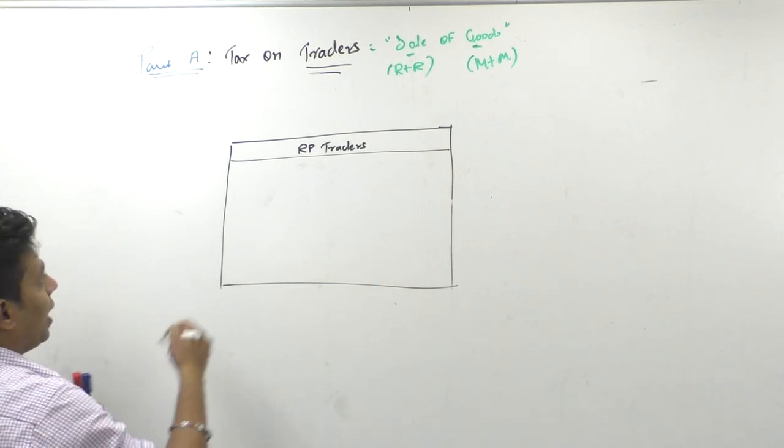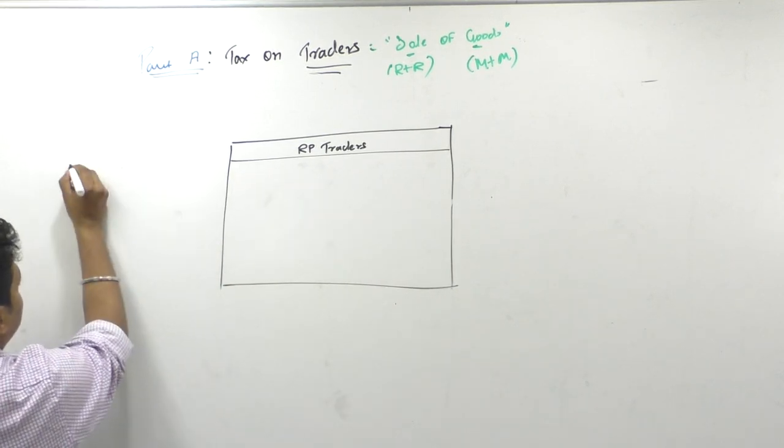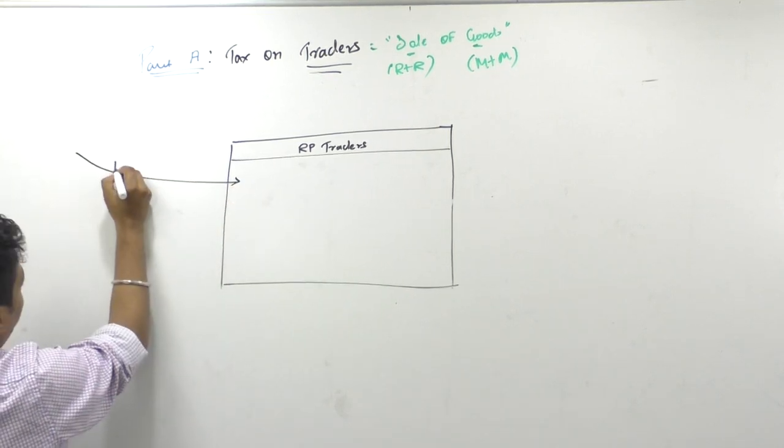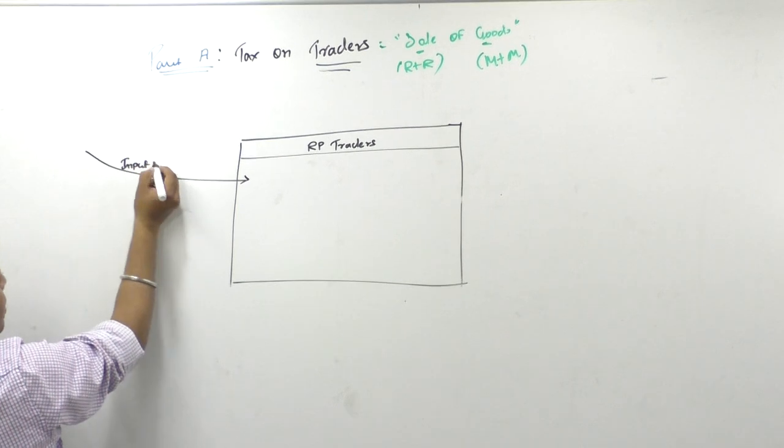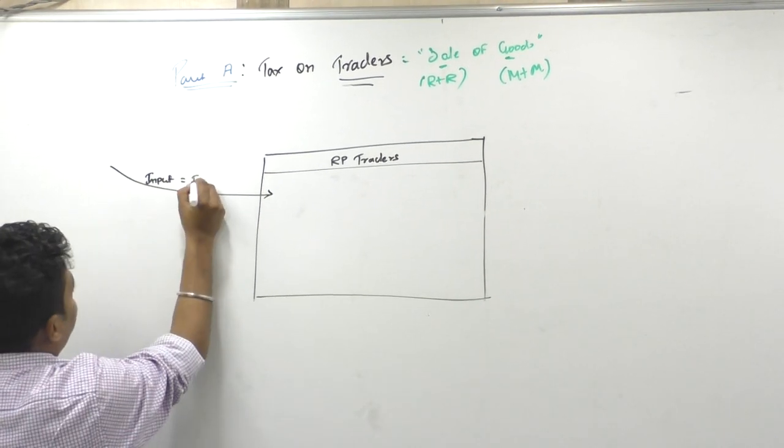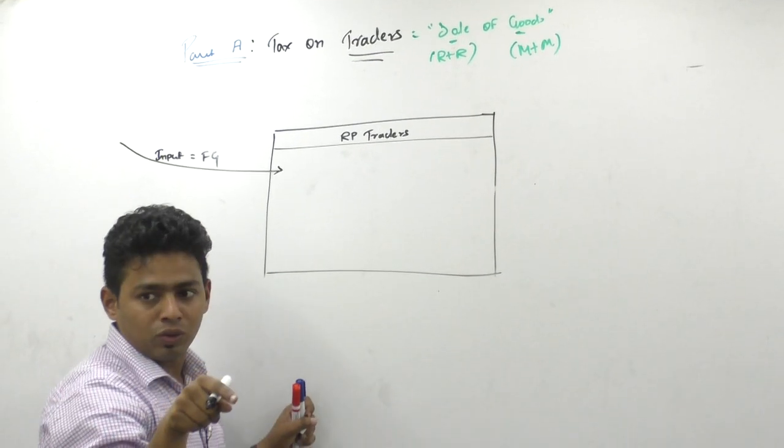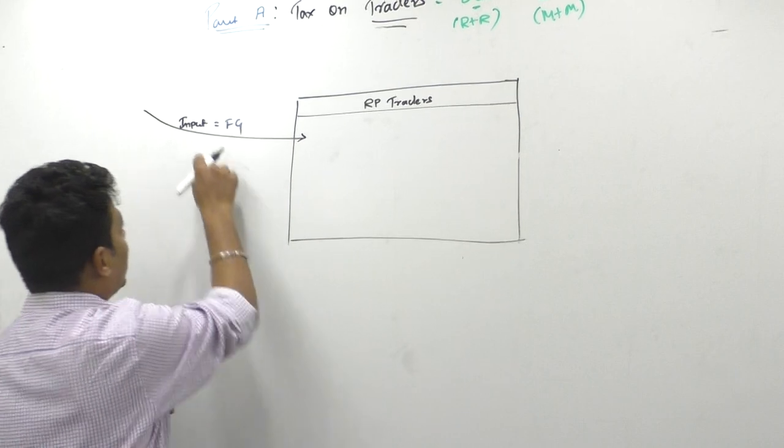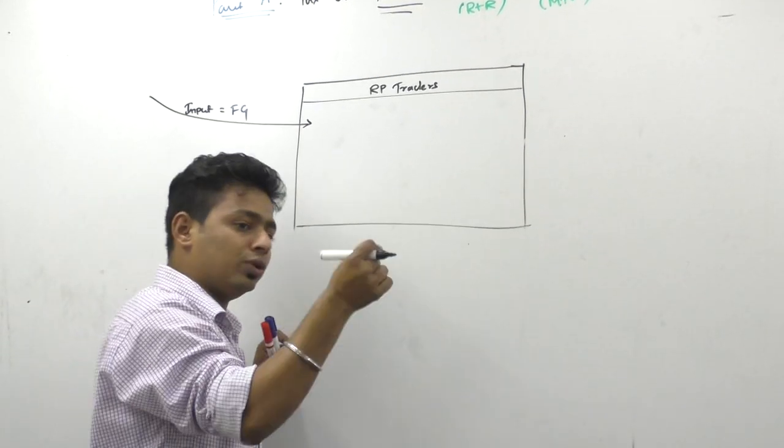So what will happen as a trader? First thing that you should buy for a trader is your input. And your input is equal to raw material or finished goods. You are buying finished goods because you are a trader, you are buying finished goods and selling finished goods. So your input is finished goods.